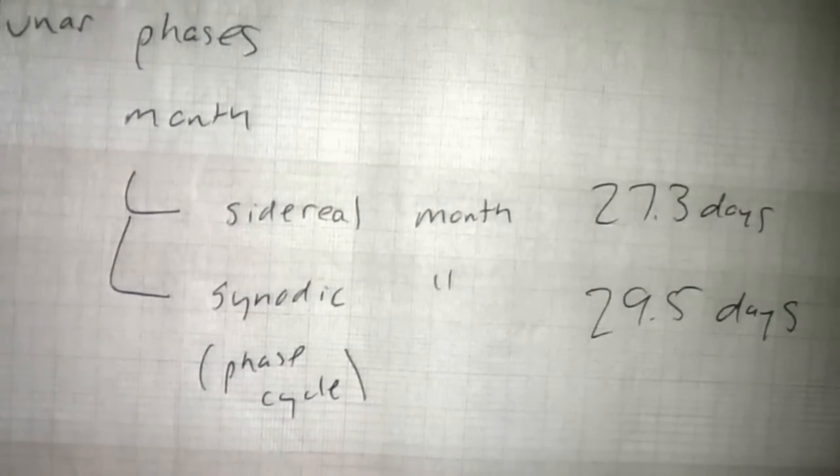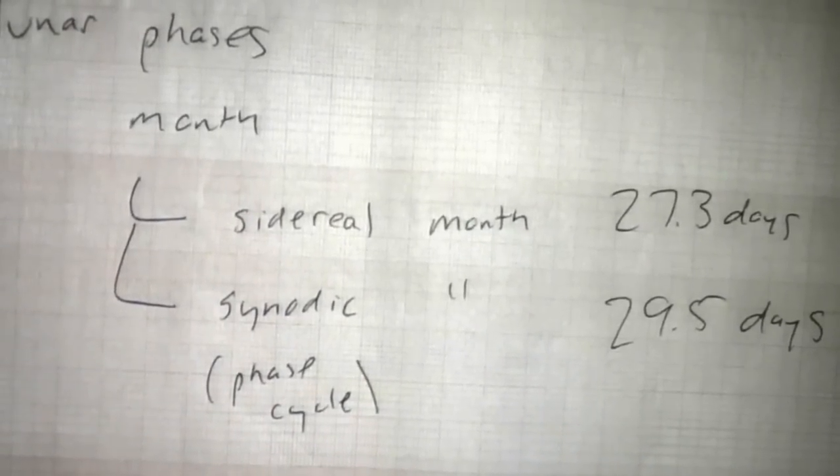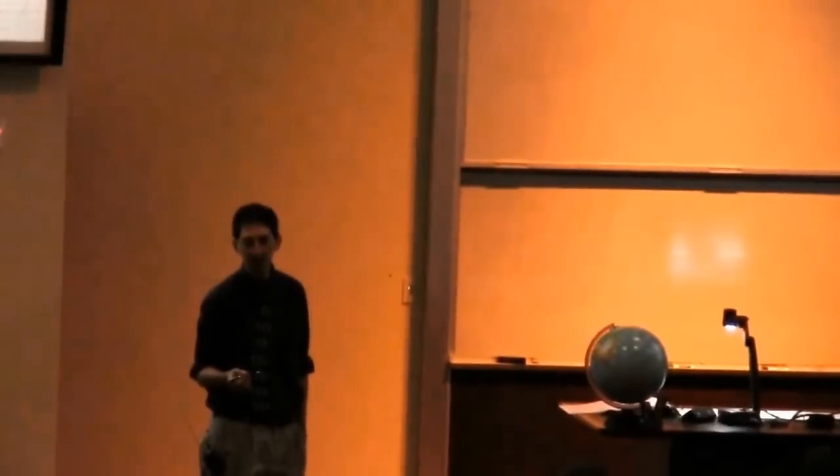So 29 and a half days, it's shorter than the calendar month. It'd be nice if we could have an integer number of lunar months in our year, but it doesn't work out that way. So we have calendar months. They tend to be 30 days. Some are 31. February's 28 or 29 on a leap year. But for the most part, the calendar months are longer than the lunar months, whether it's synodic or sidereal.